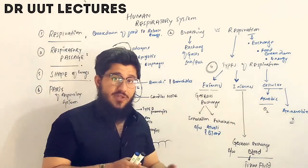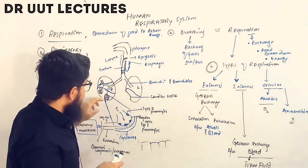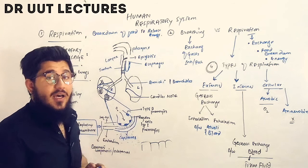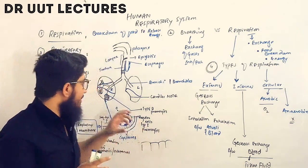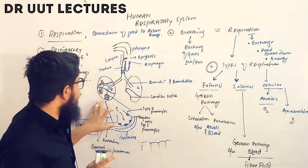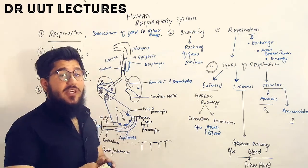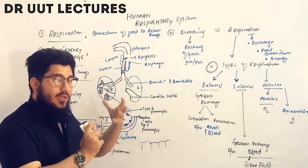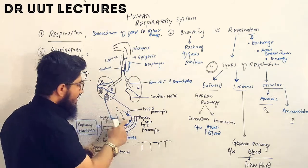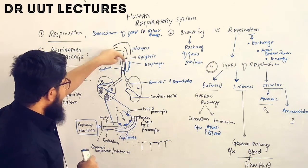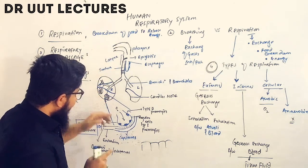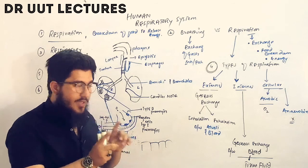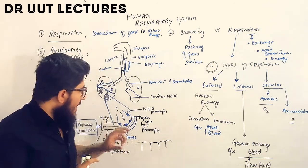After the trachea reaches the lungs, it divides into two branches called bronchi. The bronchi divide further into bronchioles — primary, secondary, and tertiary. At the terminal bronchioles, they connect with air sacs called alveoli. Each individual air sac is called an alveolus. Here, the exchange of gases takes place. Each alveolus has a connection with blood vessels called capillaries.